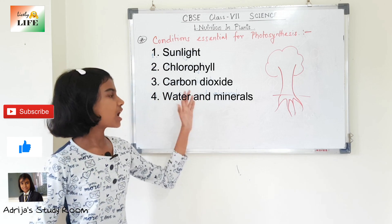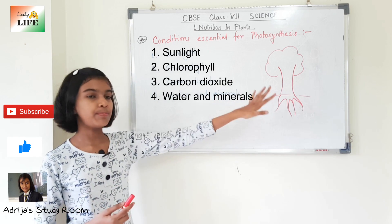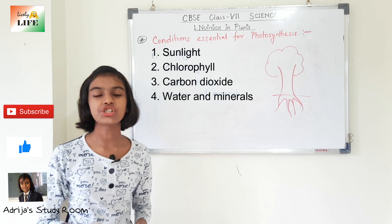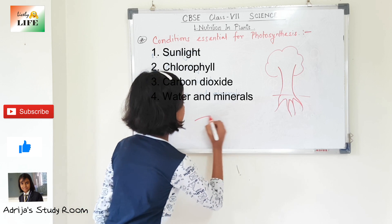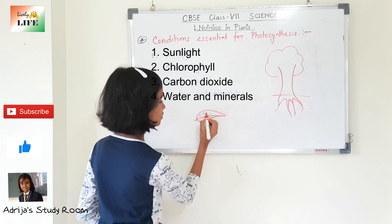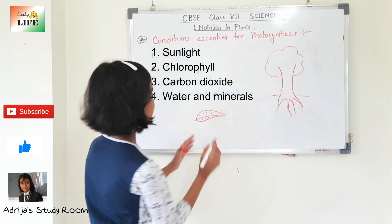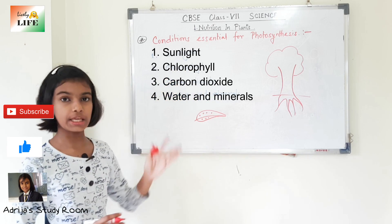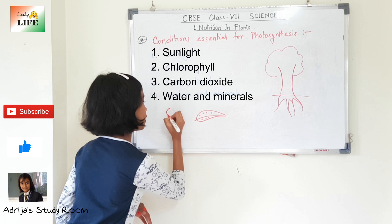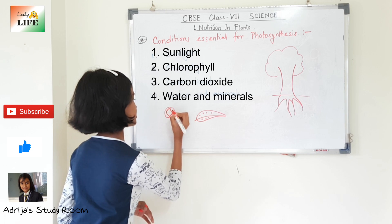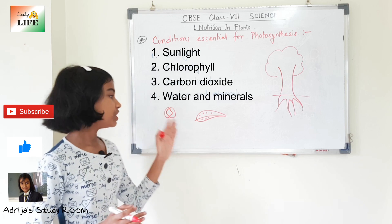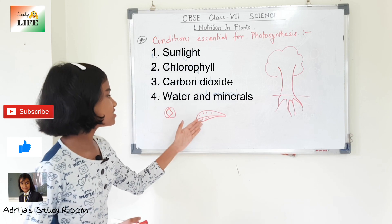Carbon dioxide is present in air, which is taken in by the plant through small openings called stomata present in the leaves. The stomata help the plant to respire and are present on the lower surface of the leaves. Each stomata is protected by two structures known as guard cells, which help in opening and closing of the stomata. Thus the stomata take in carbon dioxide, which is essential for photosynthesis.